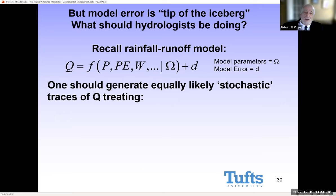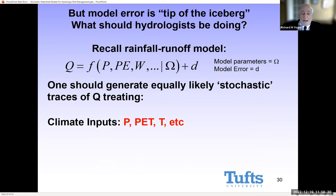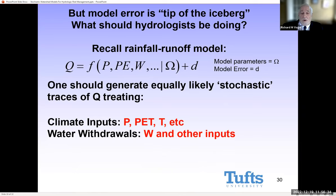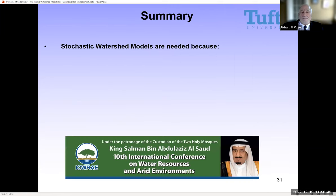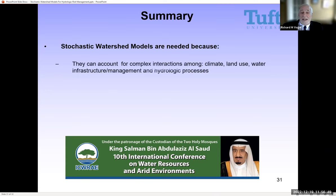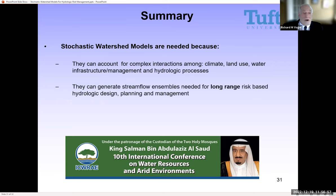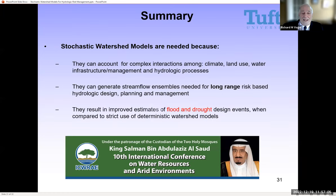What I've reported here is the tip of the iceberg. I've only shown how to do post-processing with model residuals. One should also generate other components stochastically, including all the climate inputs, water withdrawals, and model error — all as random variables. That is what needs to be done as the sequel to this work. In summary, stochastic watershed models are needed because they can account for all the complex interactions between climate, land use, and so forth; because they can generate ensembles as a prerequisite to long-range risk-based hydrologic design, planning, and management; and because they result in improved estimates of both flood and drought design events compared to the strict use of deterministic models.